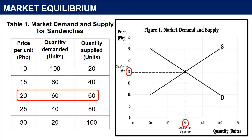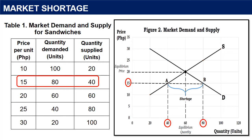If consumers and sellers do not agree on price and quantity, there will be disequilibrium resulting in shortage and surplus. Market shortage is a situation in which the quantity demanded is greater than the quantity supplied — an excess in demand. For example, if the price of a sandwich is 15 pesos, sellers are willing to sell 40 sandwiches (point A), while consumers are willing to buy 80 sandwiches (point B). This results in a shortage of 40 units (QD - QS = 80 - 40). A negative sign implies a shortage. Graphically, a shortage occurs at any price below the equilibrium point.